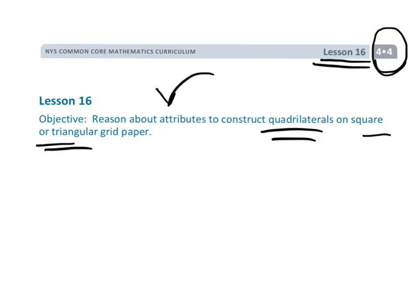Basically what this means is, in the 26 years of my teaching, sometimes it drives me crazy when I ask my students to draw a rhombus — they know what a rhombus is, but their rhombus that they draw is just ugly as all heck. So we're going to, in this lesson, reason about the attributes of these basic figures and then use special grid paper to draw better versions of these things so they don't have to look so ugly. Let's get started.